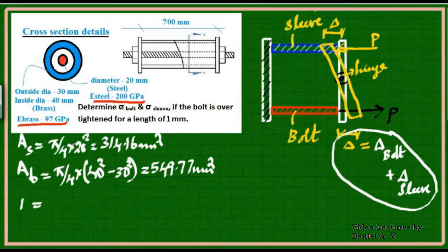Delta bolt is the elongation due to load P. The basic expression is PL/AE, so delta bolt = P × 700 / (314.16 × 2×10⁵).